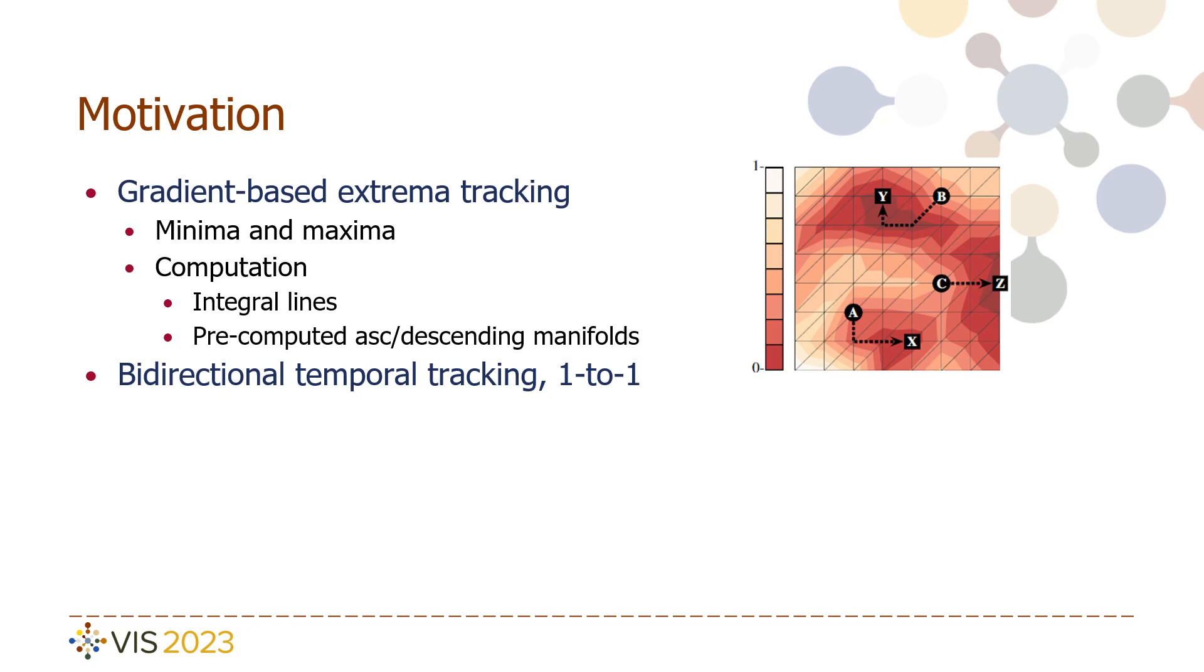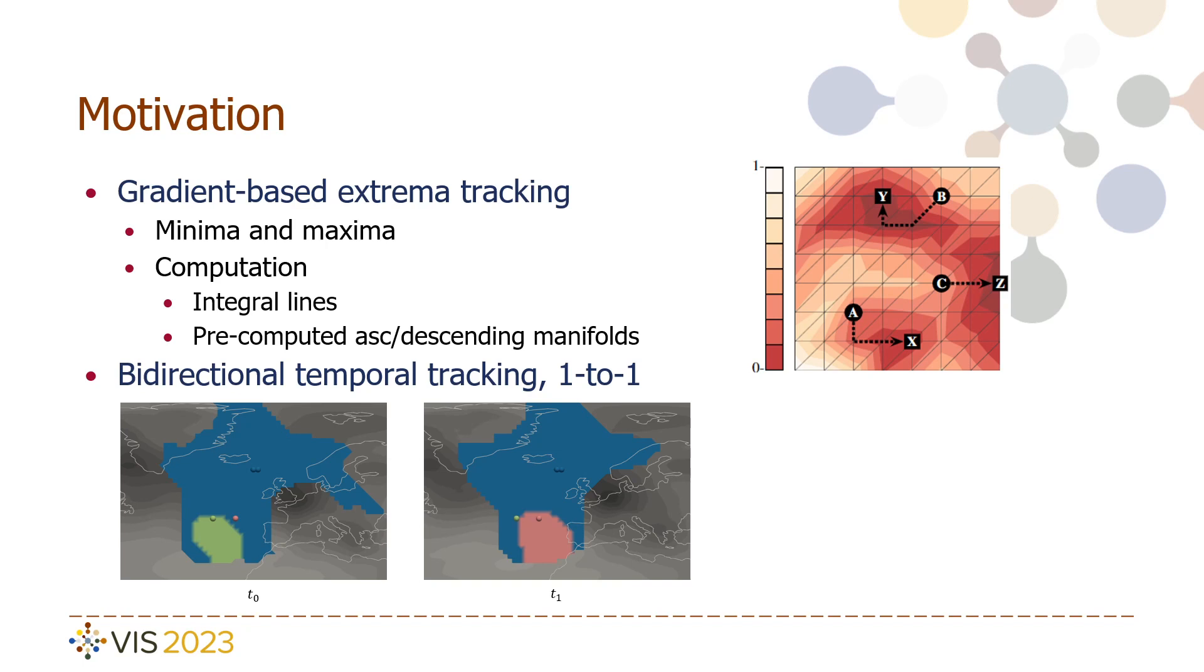However, this is a one-to-one mapping in each temporal direction and the approaches fail when extrema are in regions with low gradient magnitude or are located close to boundaries of the manifolds. See an example in the image below.